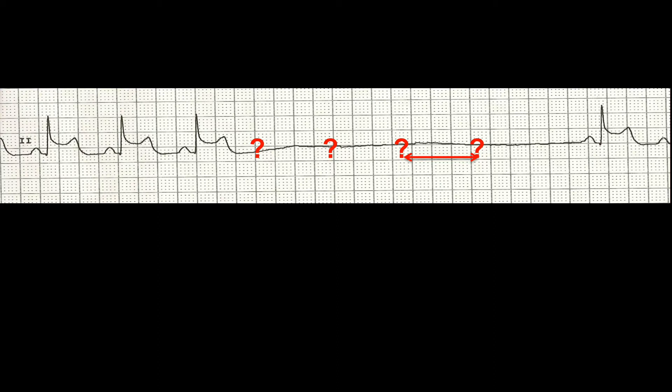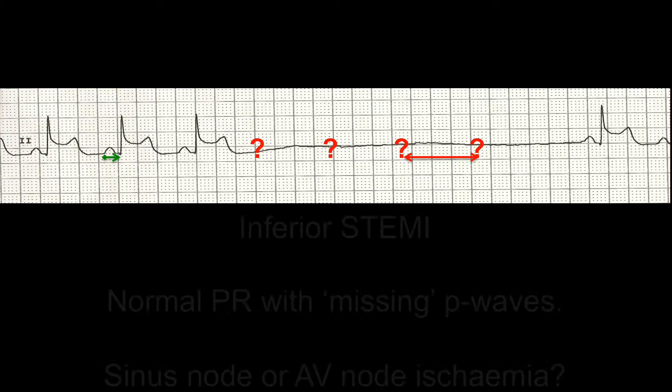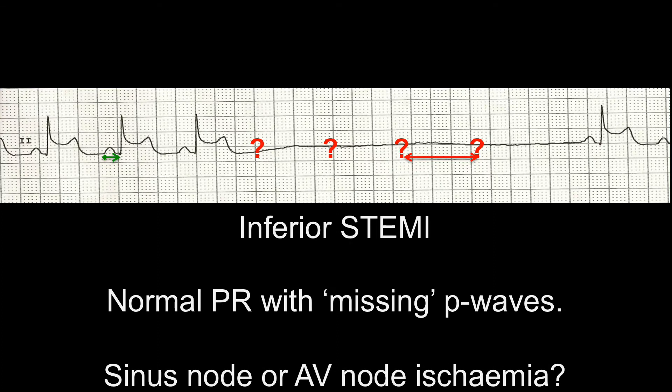This is therefore benign and very likely to recover with conservative management and does not need any immediate treatment. Hopefully with PCI — placing a stent within the right coronary artery and restoring flow to the sinus node — this will recover quickly. The normal PR interval is demonstrated. The answer here is sinus node disease, and it is generally benign.